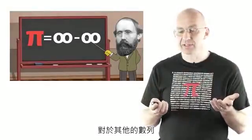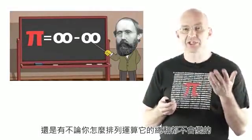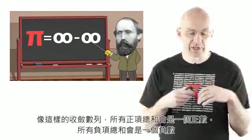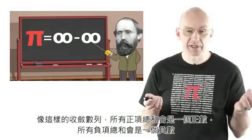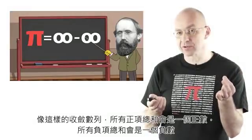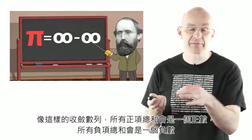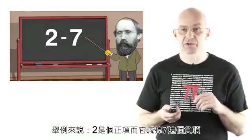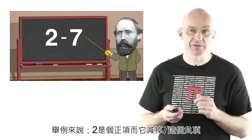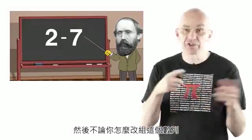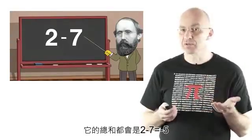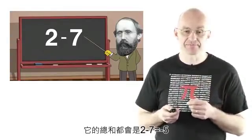Now for other series, you can actually have the situation where nothing changes no matter what you do. So there's lots of convergent series where the positive terms add up to a positive number and the negative terms add up to a negative number. For example, it could be 2 for the positive terms and minus 7 for the negative terms. And then no matter how you reshuffle this series, the sum will always be 2 minus 7, which is minus 5.